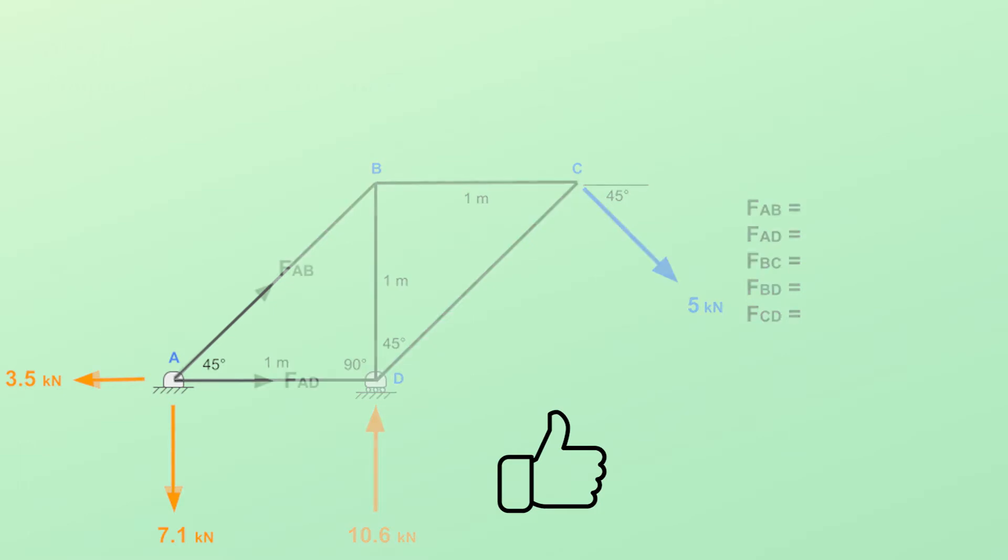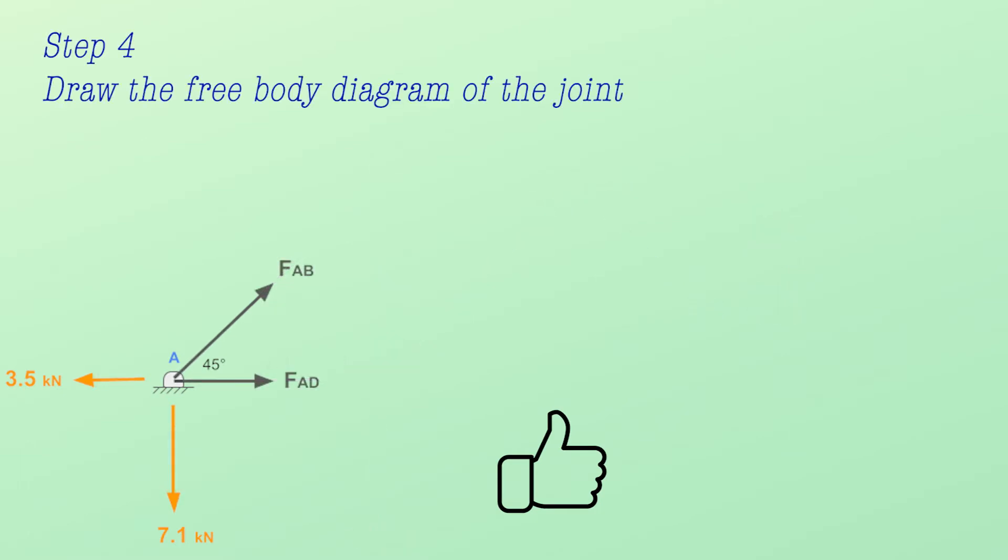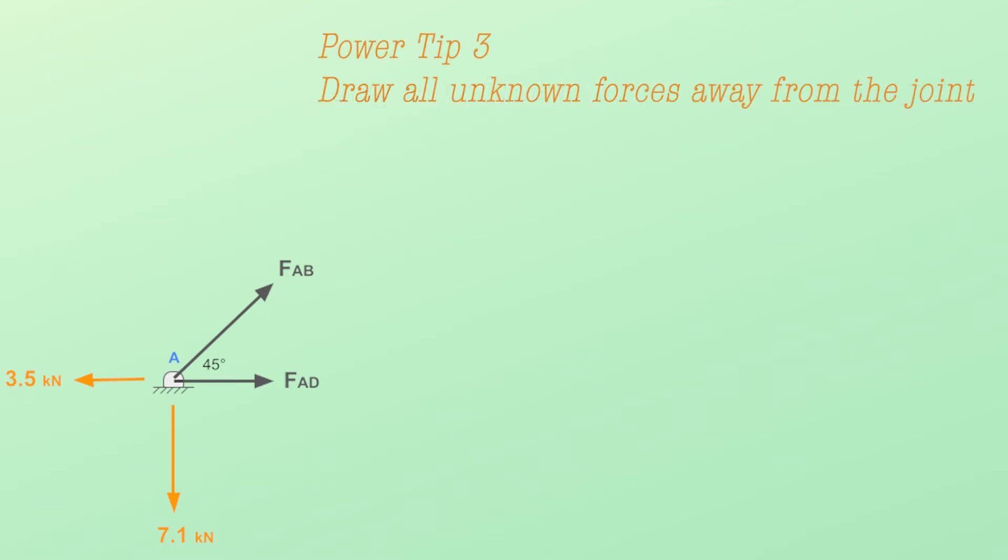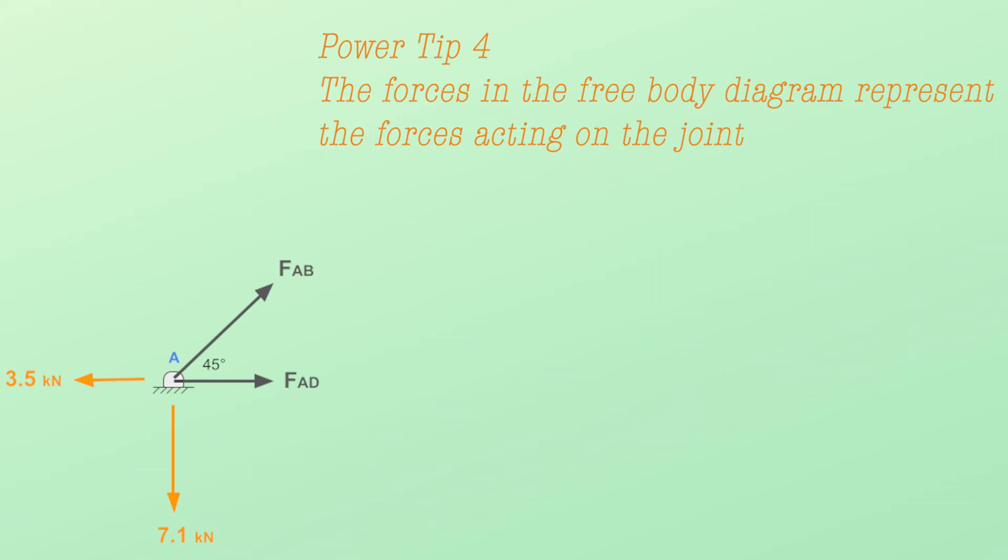Step number 4 – Draw the free body diagram of the joint. Power tip 3 – Draw all unknown forces away from the joint. You will finish the calculations faster. Power tip 4 – The forces in the free body diagram represent the forces acting on the joint. This helps not to get confused when the truss member is in tension versus compression.